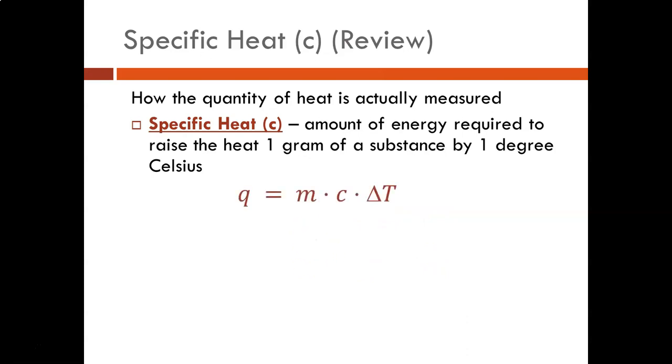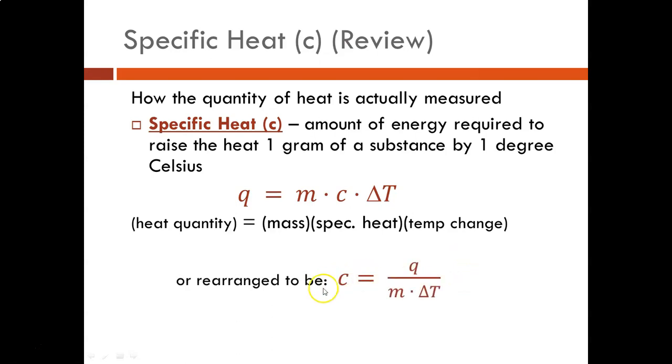The equation we used was Q equals MC delta T, where Q is the quantity of heat absorbed or released, M is the mass in grams, C is our specific heat capacity or specific heat for short, and delta T is the temperature change always defined as T2 minus T1, or T final minus T initial. We rearrange that equation to solve for specific heat C as C equals Q over M delta T.